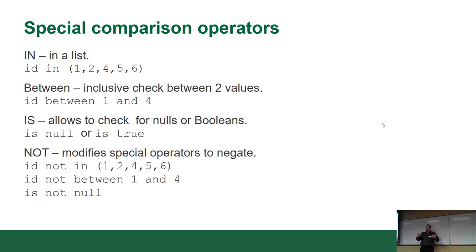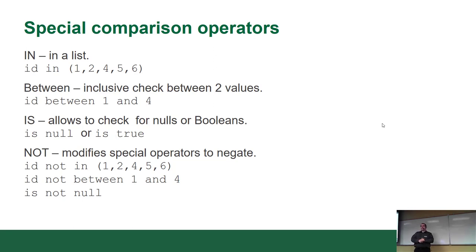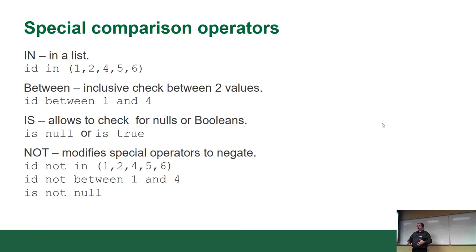There's also the IN operator, which is great for a finite list of values. You can say WHERE ID IN (1, 2, 4, 5, 6) and it will return everything from that list that exists. Some people like using IN — it's a great way to handle a finite list of values.